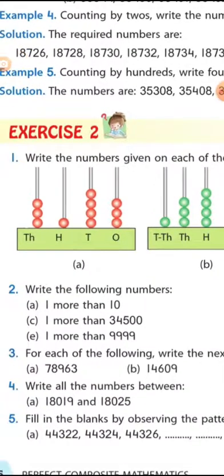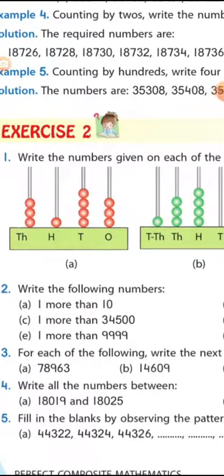For the first part, looking at the spike abacus: there are three beads at the ones place, so we write three. Four beads at the tens place, so we write four. One bead at the hundreds place, so we write one. Three beads at the thousands place, so we write three. The number is 3,143 — three thousand one hundred and forty-three.